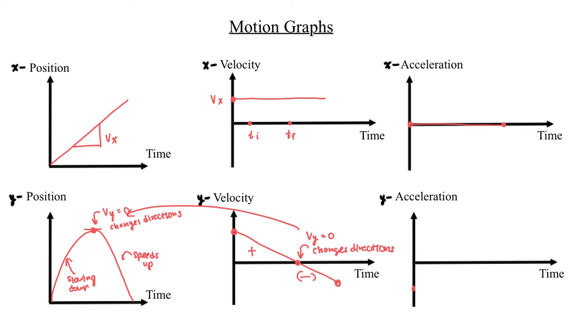And in this case, my y acceleration is a constant negative 9.8 meters per second squared. Gravity is the only force acting on this object. In our next unit, we'll learn more about forces. But for now, just know that because gravity is the only force acting on this object, the only acceleration it has is in the y direction. And that's equal to negative 9.8 meters per second squared.